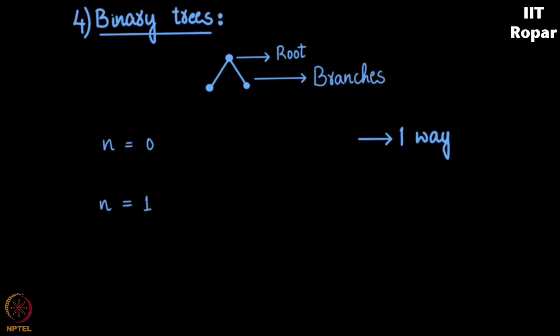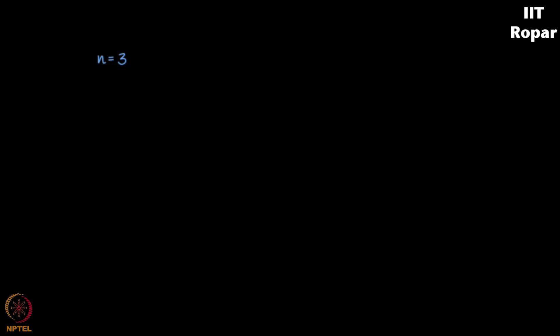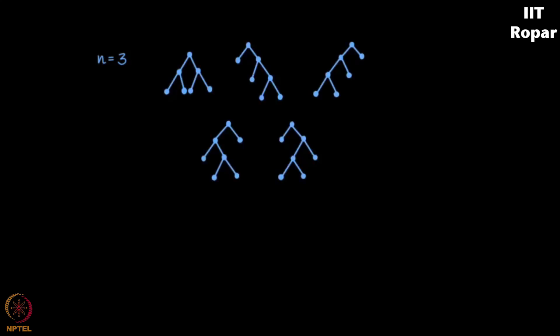When n is 1 there is only one node having two branches, and this can also be done in one way. When n is 2 there are two nodes each having two branches. I can draw it one way, and another way — so when n is 2 it can be done in two ways. When n is 3 there are three nodes each with two branches, and this can be drawn in five ways.